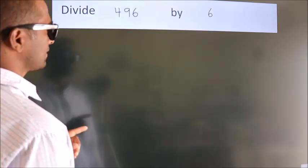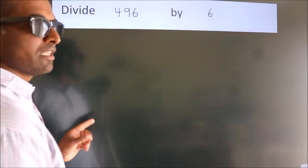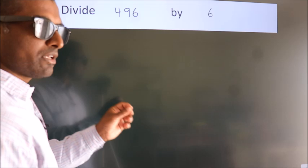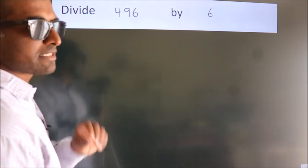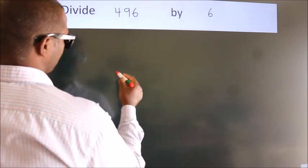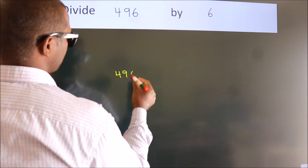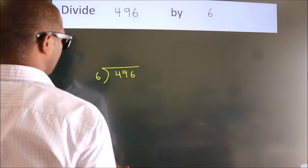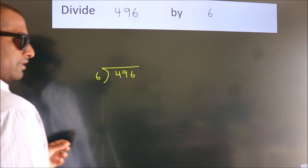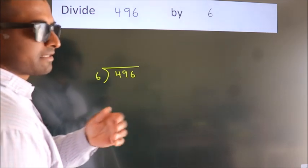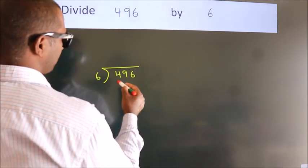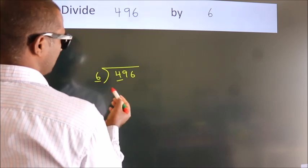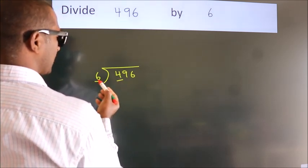Divide 496 by 6. To do this division, we should frame it in this way: 496 here, 6 here. This is your step one. Next, here we have 4. 4 is smaller than 6.